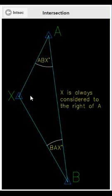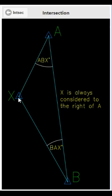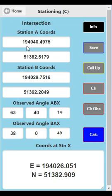Point X here doesn't have to be a station you're physically setting up at. This could be an inaccessible point — on a bridge, underneath a bridge, or anywhere you need to get a coordinate but can't access directly because you haven't got a reflectorless instrument, can't get a target up there, or can't get a retro target on it. Intersection is a good way to get those coordinates. Again, you can save the station A and B coordinates and call them up at another time.